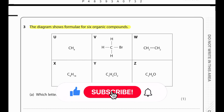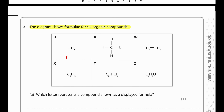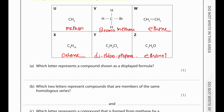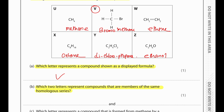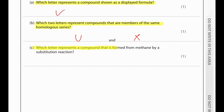The diagram shows the formula for six organic compounds: methane, X is octane, V is bromomethane, ethane, Z could be ethanol, and Y is dichloropropane. The names are just for reference. V represents a compound shown as a displayed formula. U and X represent compounds that are members of the same homologous series — they are alkanes. V represents a compound formed from methane by a substitution reaction.